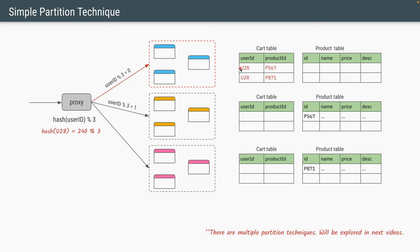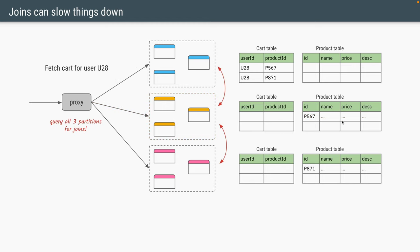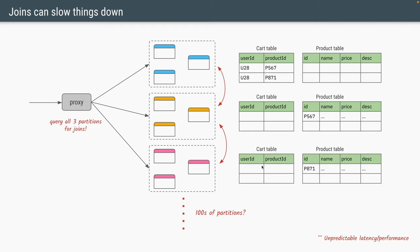For the third and final observation, let's understand the access pattern of our functionality. In this example, all the data for user ID u28 lands in partition 1. We apply the same technique — a hash on the product ID, a modulo operation — and for product ID p567 the modulo returns 1, so it goes in the second partition. But now the problem is: if we try to fetch the cart for user u28, since the product IDs in their shopping cart lie in other partitions, we have to do a cross-partition join — which means this partition's table needs to join with the other partitions' tables. That is a very inefficient operation, and this problem becomes even bigger if we have hundreds of partitions.